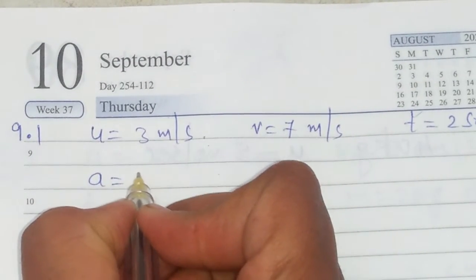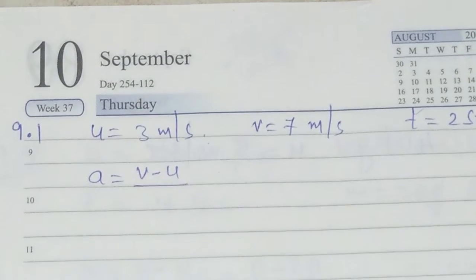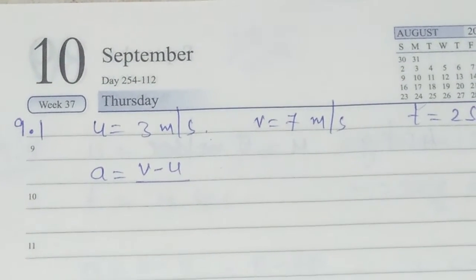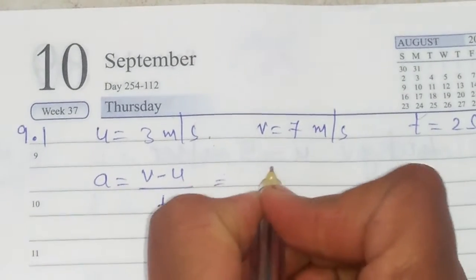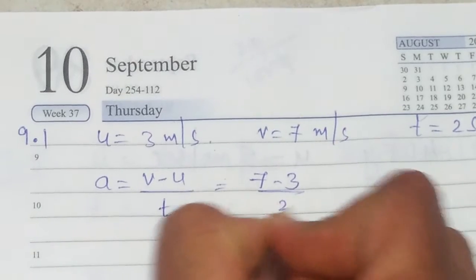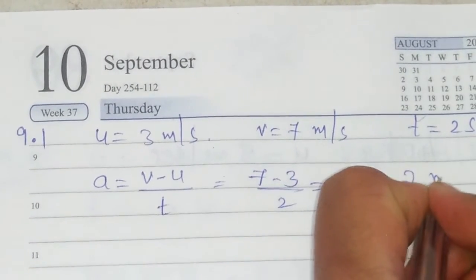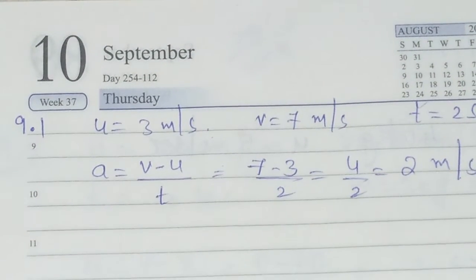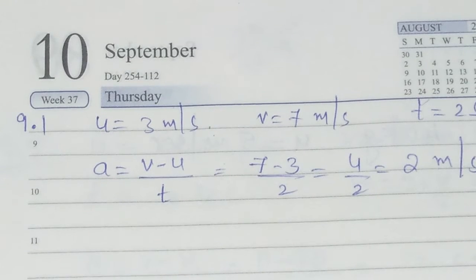Acceleration, you know already, is the rate of change in velocity. A is equal to V minus U by T. So here we are going to get the value as 7 minus 3 by 2. That is nothing but 4 by 2, which gives 2 meters per second square.